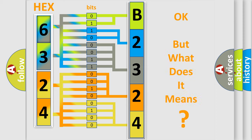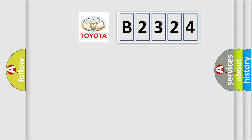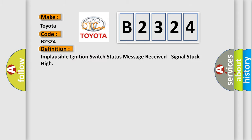We now know how the diagnostic tool translates the received information into a more comprehensible format. The number itself does not make sense to us if we cannot assign information about what it actually expresses. So, what does the diagnostic trouble code B2324 interpret specifically for Toyota car manufacturers? The basic definition is: Implausible ignition switch status message received, signal stuck high.